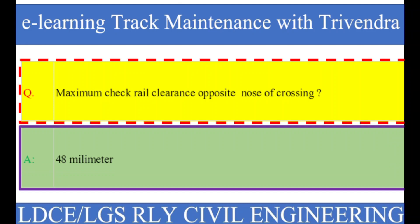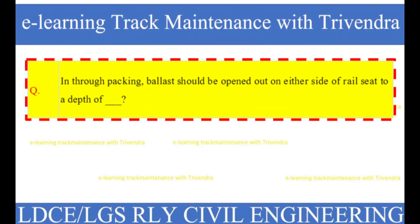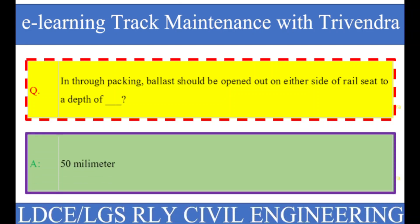Question number 75: In through packing, ballast should be opened out on either side of the rail seat to a depth of? The right answer is 50 millimeters.